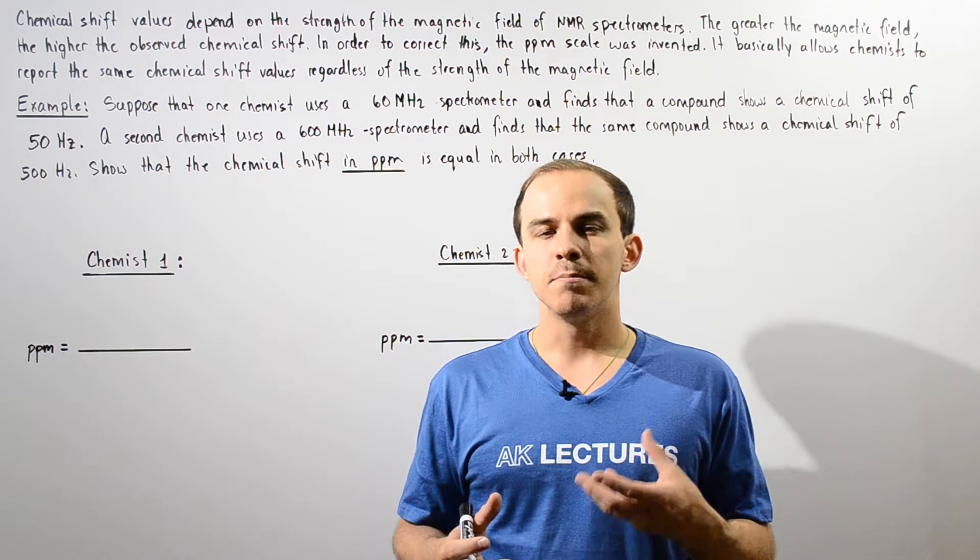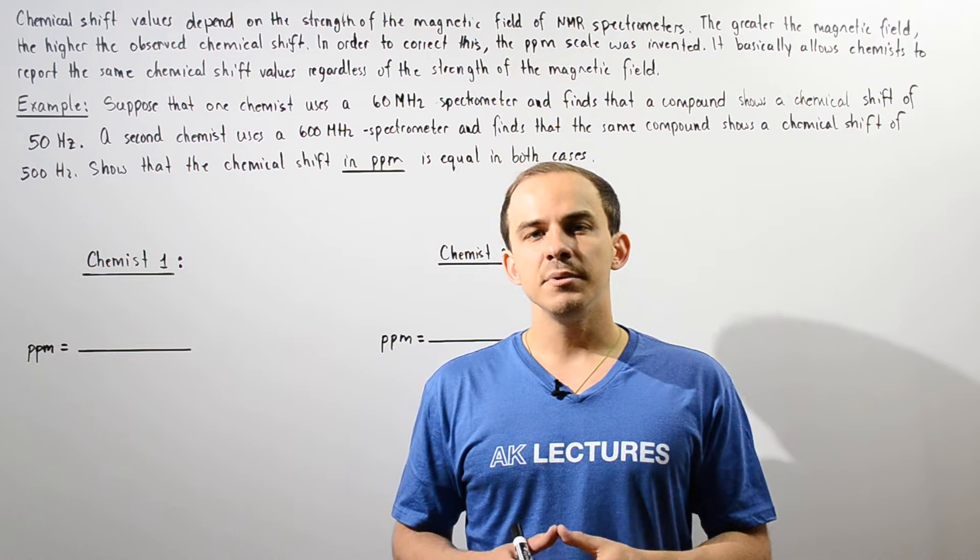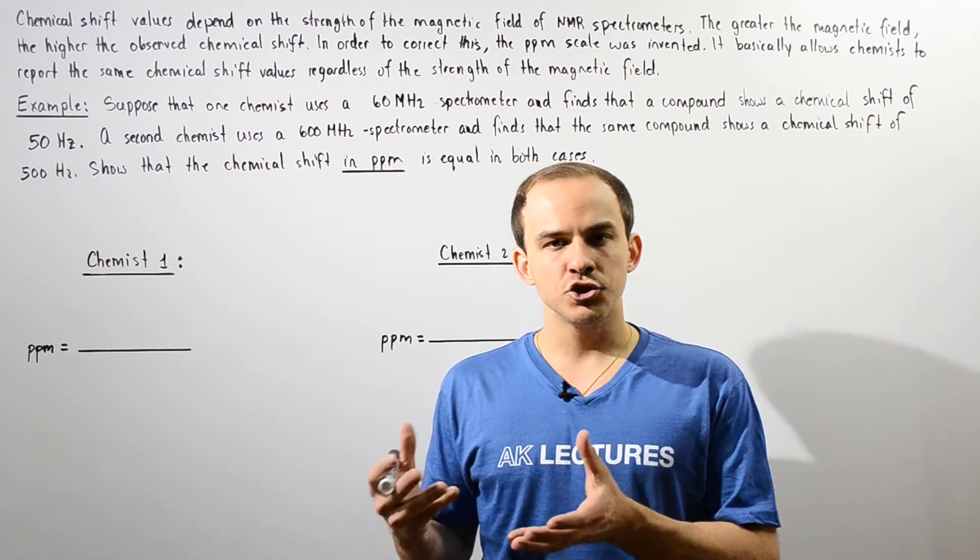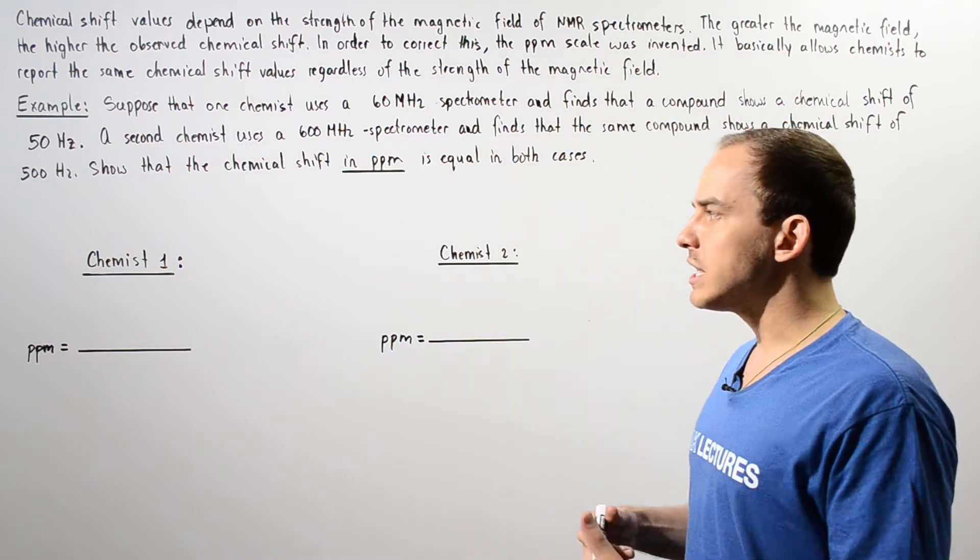Previously we described the parts per million or the PPM scale that is commonly used to describe the chemical shift when we're dealing with proton NMR spectroscopy.